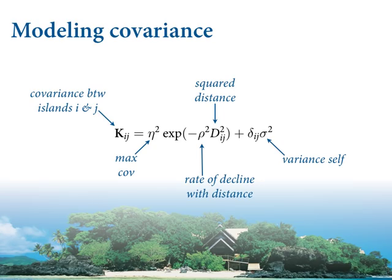This is the Gaussian part — not the normal distribution, but Gaussian because e to the minus something squared gives you the bell curve shape. So this gives you a Gaussian fall-off with distance. The last bit is often called the 'jitter' in the literature: delta_ij times sigma-squared. Delta_ij is an identity function — if i and j are equal, delta_ij is one; if different, it's zero. It turns sigma-squared on and off, representing additional variance of an island with itself, making the matrix positive definite.